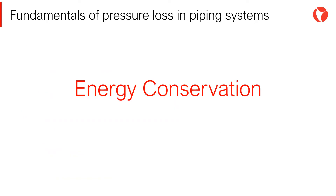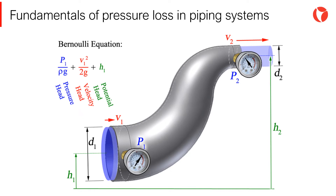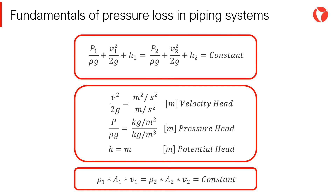The energy conservation law states that energy cannot be created or destroyed — it can only be transformed from one form to another; for example, when electrical energy is transformed into heat energy in a heater. Bernoulli's principle states that along any flow stream, the total energy in two different sections of a system is constant, and it is formed by the piezometric heights due to pressure, the kinetic heights due to velocity, and the potential heights due to position — which is nothing different than the energy conservation law expressed in those terms. It is worth mentioning that each of these terms can be expressed in meters, the linear unit of the MKS system.